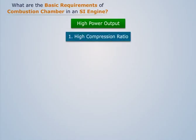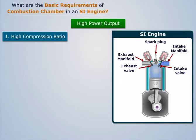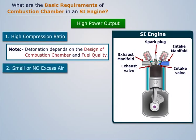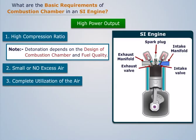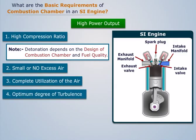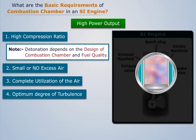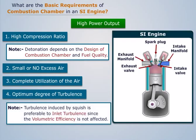High power output. A high power output is obtained when there is a high compression ratio. The compression ratio is limited by the phenomenon of detonation, which depends on the design of the combustion chamber and fuel quality. High power output also requires small or no excess air, complete utilization of the air, no dead pockets, and an optimum degree of turbulence. Turbulence is induced by inlet flow configuration or squish — the rapid ejection of gas trapped between the piston and a flat or corresponding surface in the cylinder head. Note that turbulence induced by squish is preferable to inlet turbulence since the volumetric efficiency is not affected.